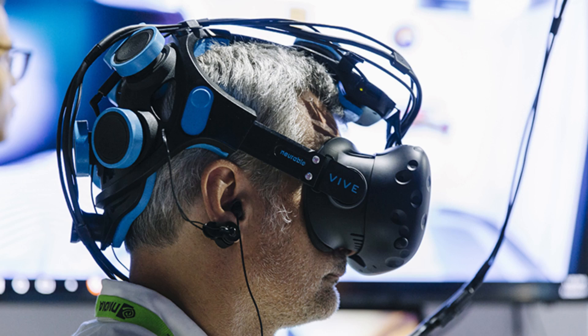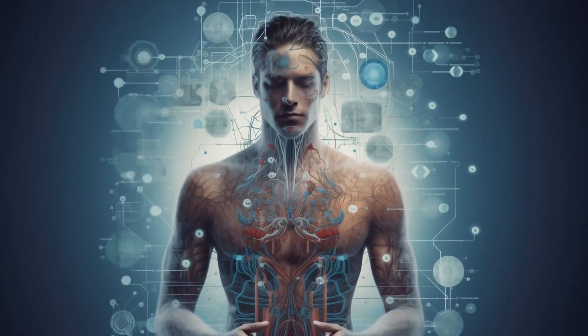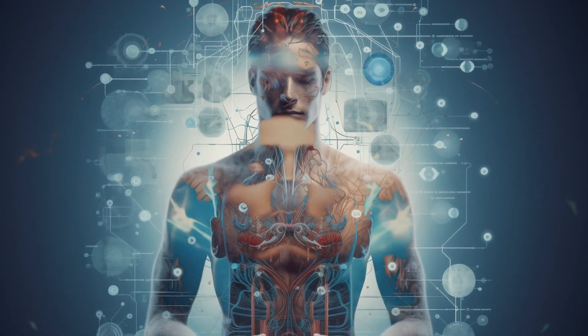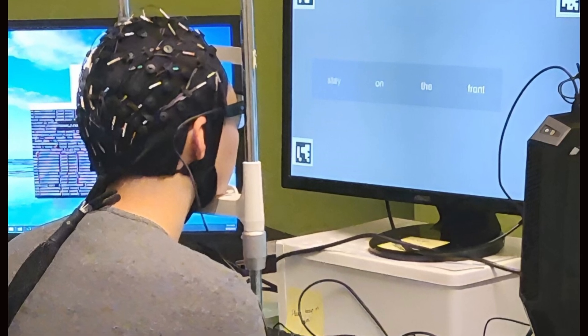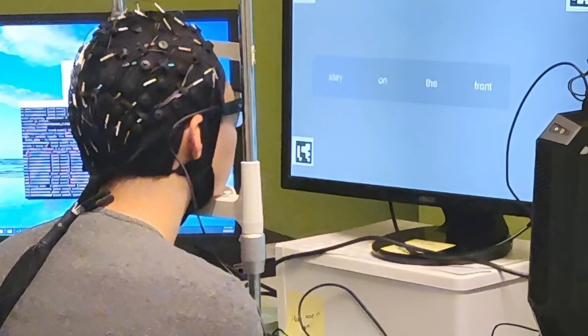There's also a device that can hear your thoughts without reading your brainwaves directly. It listens to the subtle muscle movements in your face and jaw when you think about speaking. An AI figures out what words you're thinking of.